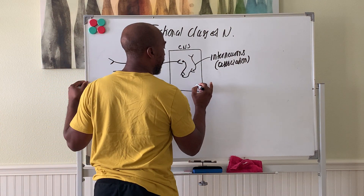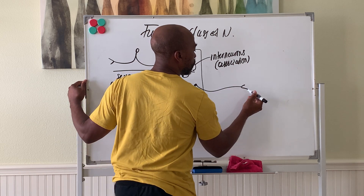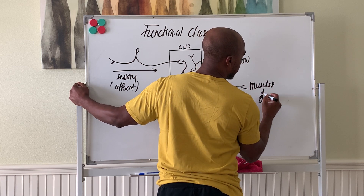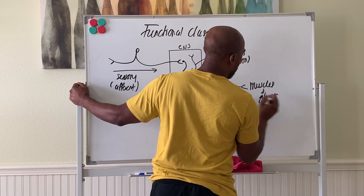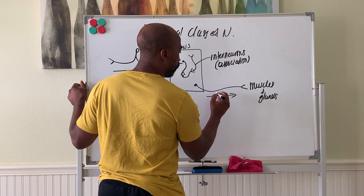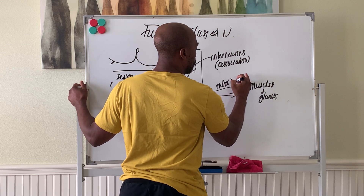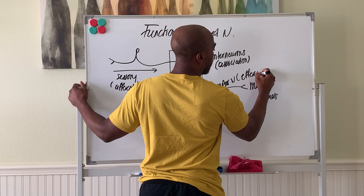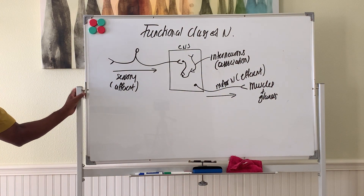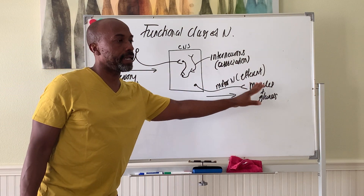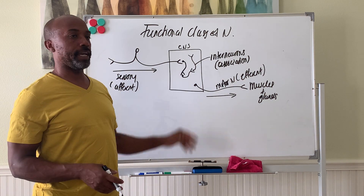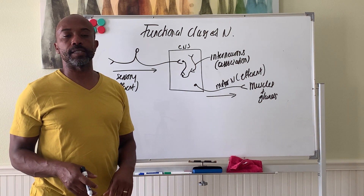And then you have neurons that leave the CNS to go out to muscles or glands. These neurons that carry signals out of the CNS we call your motor neurons, also called efferent neurons. So those are your three types of functional neurons: sensory — incoming; motor — outgoing; and the ones that reside completely in your brain and spinal cord are called your interneurons or association neurons.